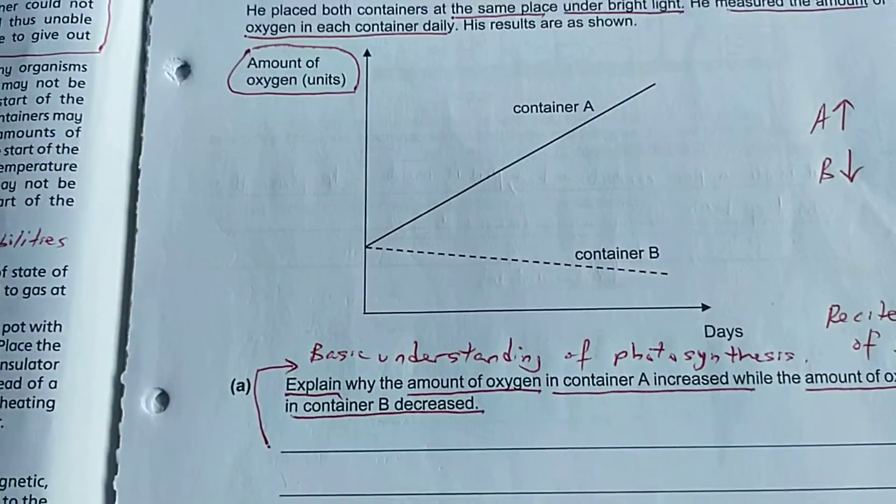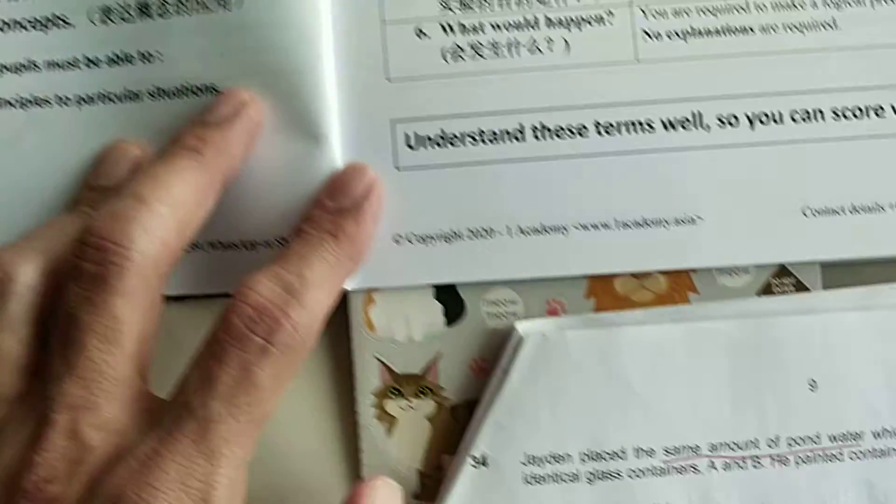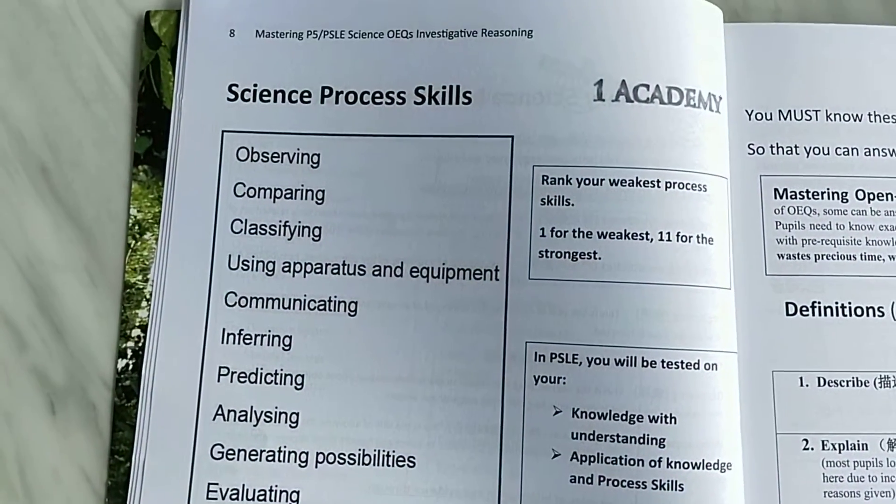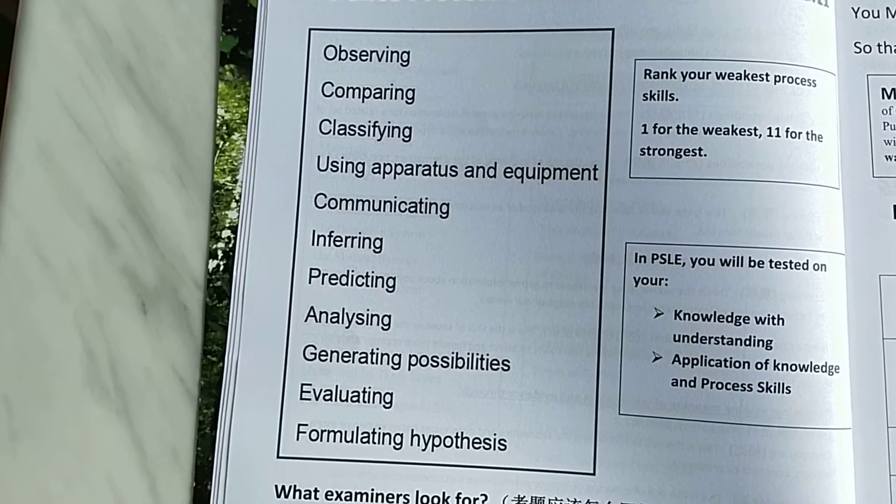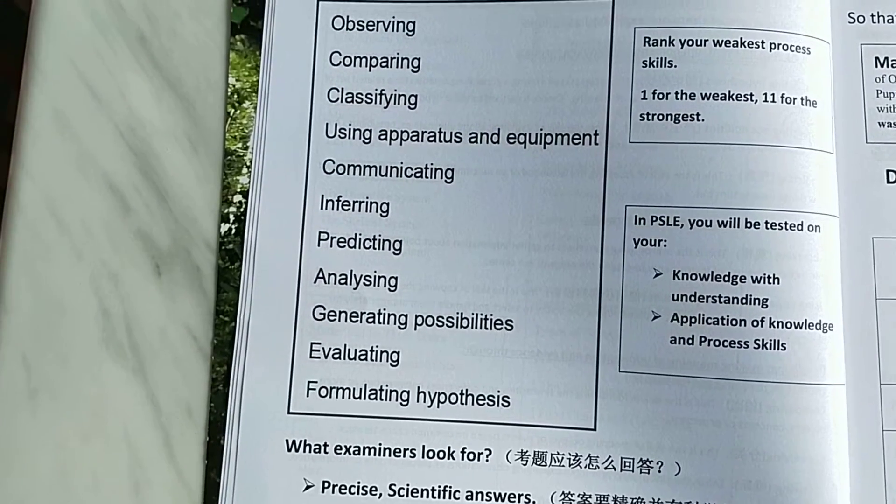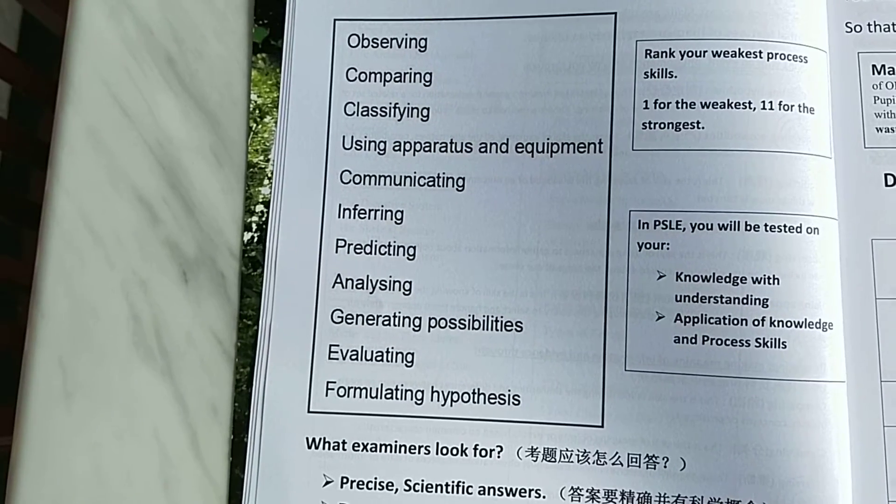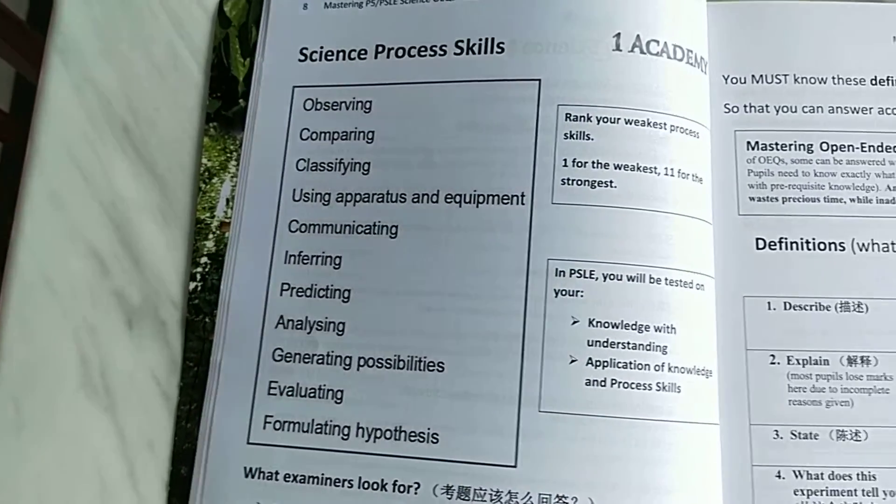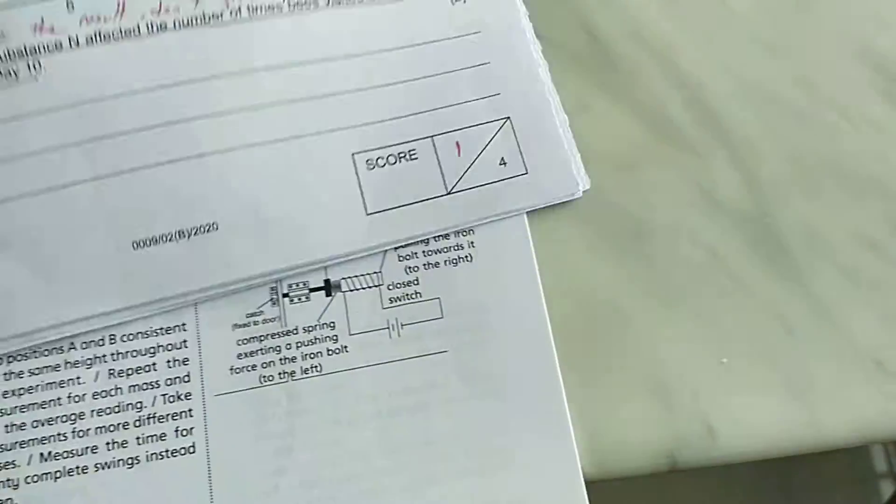This type of question we call communicating skills. As you see in MOE, there's this series of process skills the student needs to know from the easiest observation and comparing all the way down to formulating hypothesis. Formulating hypothesis is the most difficult science process skill which was also tested in a previous question.